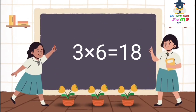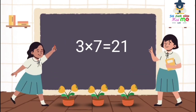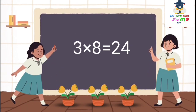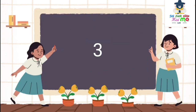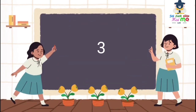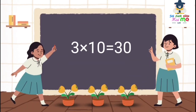3×6=18, 3×7=21, 3×8=24, 3×9=27, 3×10=30.